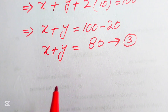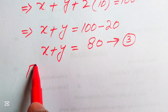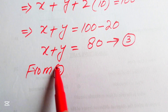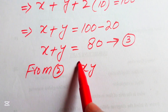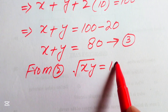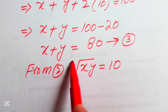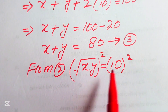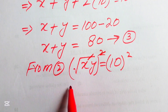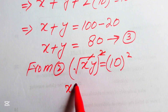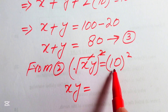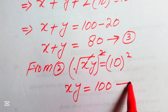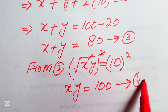Now we focus on equation number 2. We copy it down: the square root of xy equals 10. We take squaring on both sides of equation number 2, and the square root is gone, giving us xy equals 10 squared equals 100. We call this equation number 4.